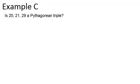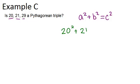Is 20, 21, 29 a Pythagorean triple? So to be a Pythagorean triple means it's three numbers that work with the Pythagorean theorem, where the two smaller numbers, if you square them and add them up, will equal the larger number squared. So what we're testing is, again, if 20 squared plus 21 squared equals 29 squared.